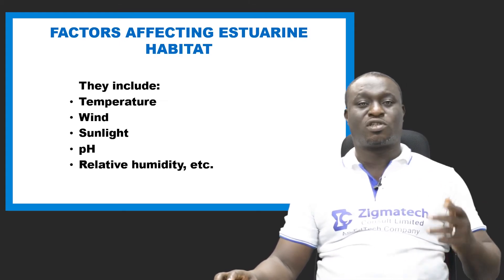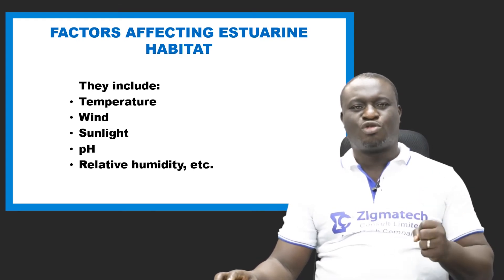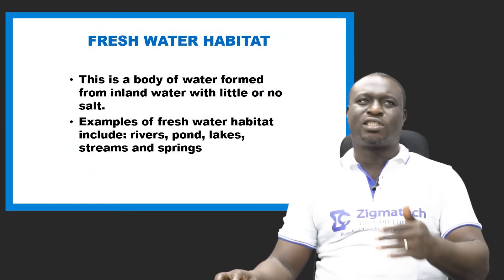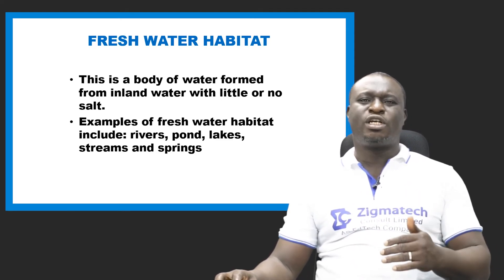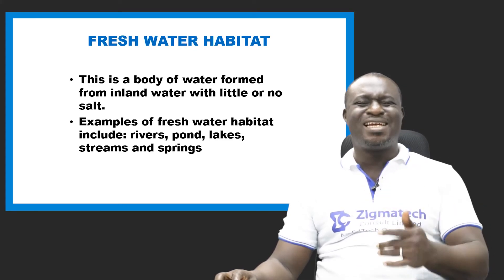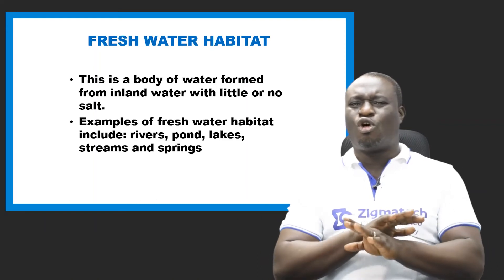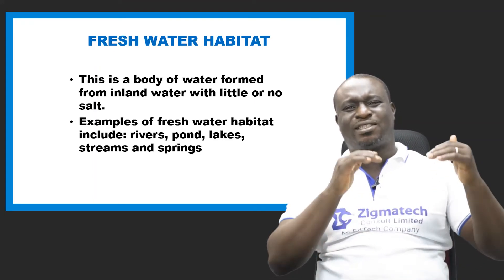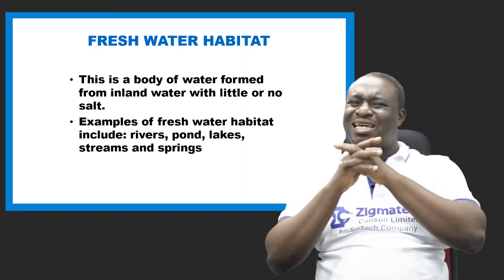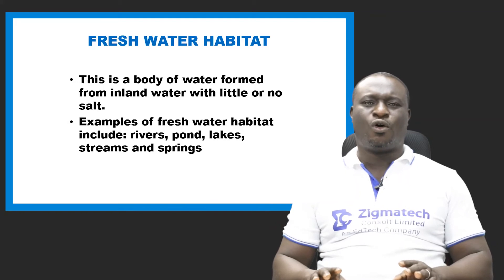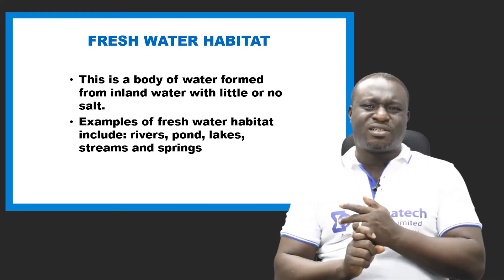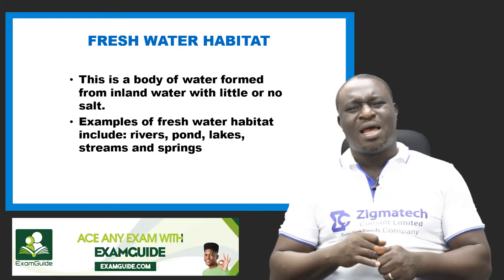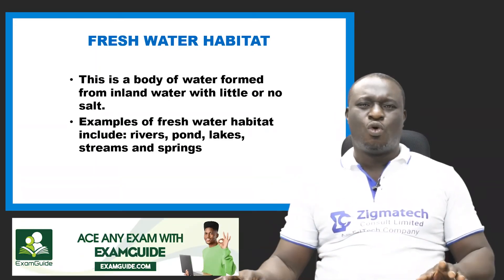Finally, let's look at freshwater habitat. Freshwater habitat is a body of water formed from inland waters with little or no salt. Compared to marine water habitat which has high salinity, freshwater habitat has very little or no salinity. Examples include rivers, ponds, lakes, dams, streams, and springs.